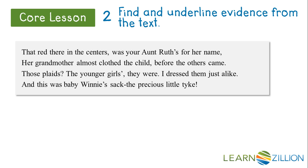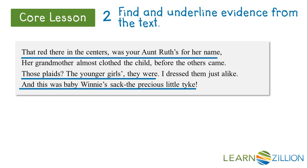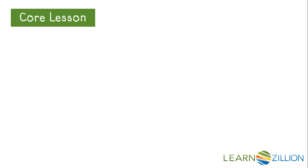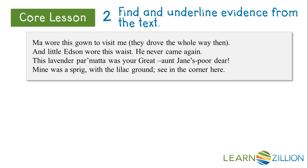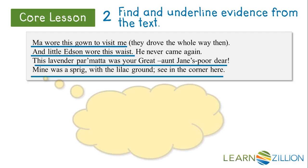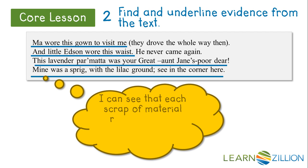We also see from the text that she remembers her child Ruth, and some younger girls and her baby Winnie. We can see that grandmother is excited about the memories she has when she looks at the squares in the quilt. If we look further, we can see that she also remembers her mother, little Edson, her sister Jane, and even some clothing that reminds her of herself as a child. Each scrap of material reminds her of another family member.